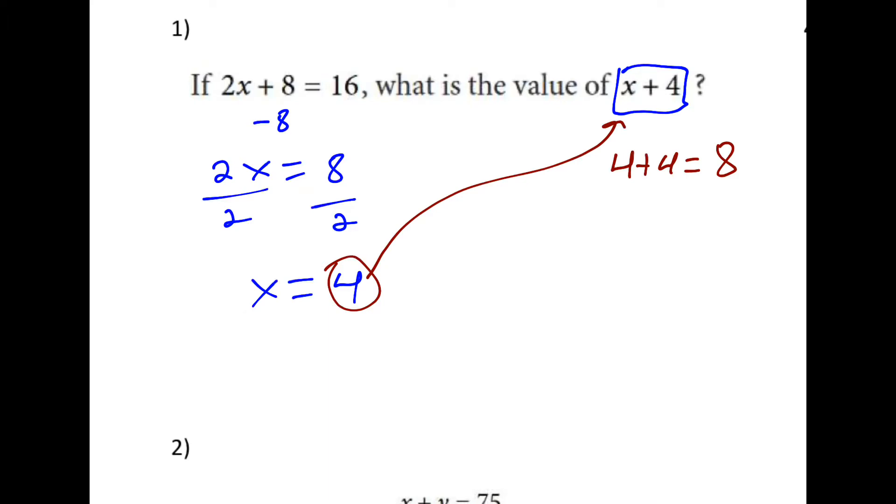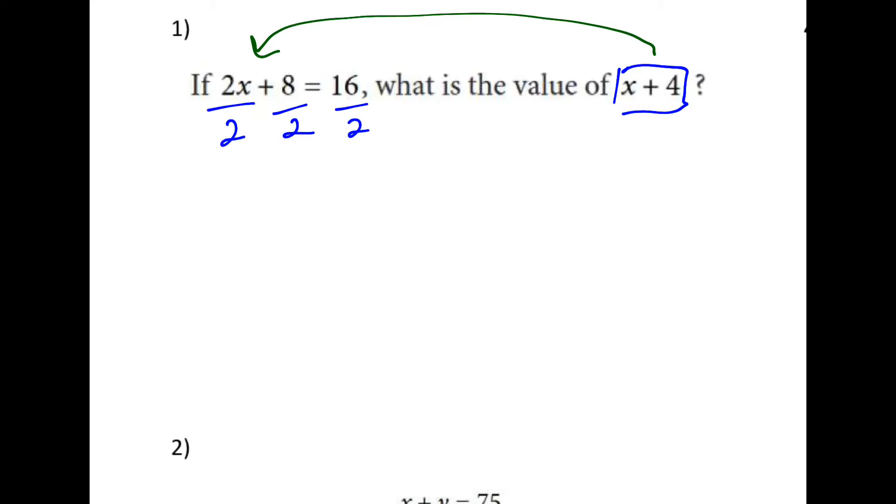However, just to make an observation, if you look at x plus 4 compared to 2x plus 8, we can just double that or divide it by 2. So what happens if we divide each one of these terms by 2? We get x plus 4 equals 8. Same answer, one step.